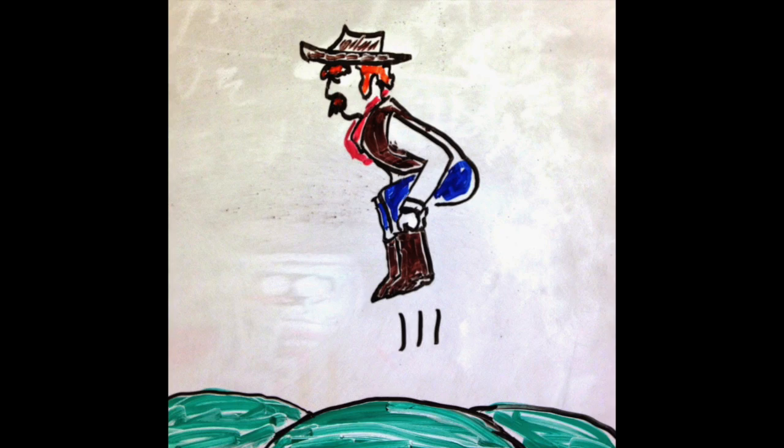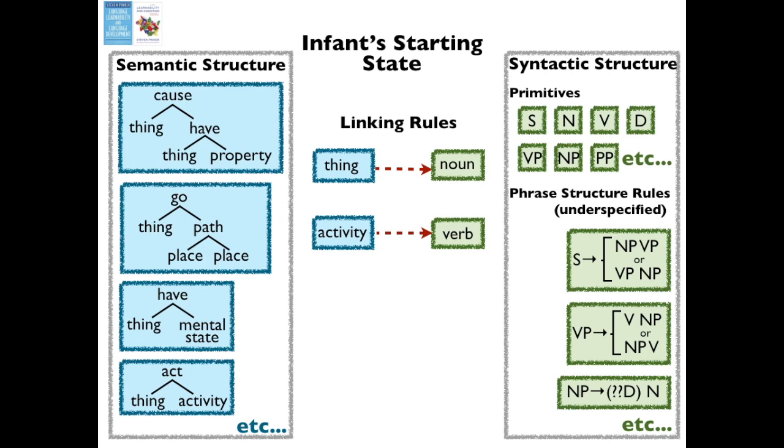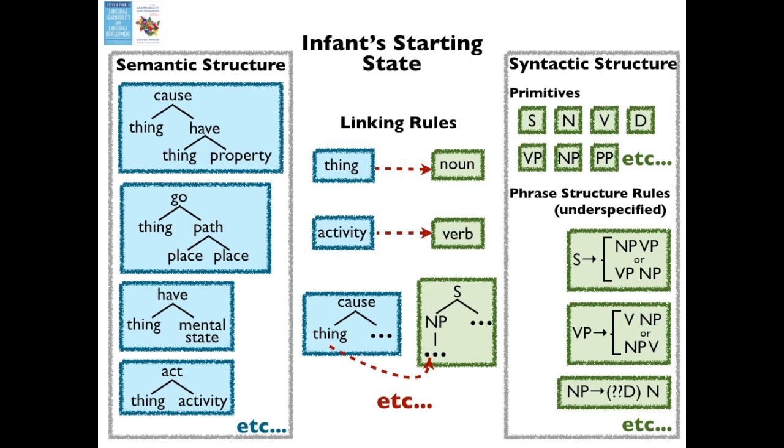Pinker dubbed this theory semantic bootstrapping because you're using semantics to grab hold of a piece of syntax, learn that piece, and then use that knowledge to learn the rest of syntax — so you're pulling yourself up by the bootstraps. Pinker proposed that there are many innate rules linking semantics to syntax. In addition to the rule that says names of objects will be nouns, there's a rule that says actions are going to be described by verbs. Similarly, the infant can learn how subjects are marked in her language by leveraging an expectation that agents of caused events should appear as subjects of verbs.